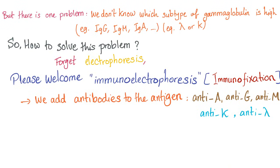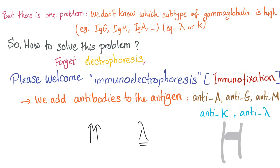So the problem with electrophoresis is that we don't know which subtype of gamma globulin is elevated. To solve this, we use immunoelectrophoresis or immunofixation. We add antibodies — anti-A, anti-G, anti-M, anti-kappa, anti-lambda — to the antigen. When anti-lambda detects lambda, it shows a band on immunoelectrophoresis, allowing us to identify that the elevated immunoglobulins have a lambda component.